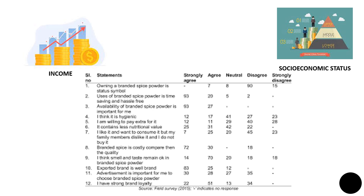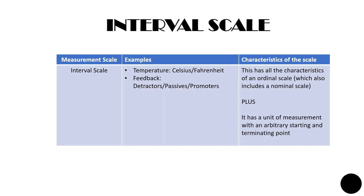The same is true for other variables such as socioeconomic status and attitudes measured on an ordinal scale. To summarize, an ordinal scale has all the properties of a nominal scale in addition to ranking subcategories in order of the magnitude of the property or characteristic. However, the distance between subcategories is not equal and there is no quantitative unit of measurement.